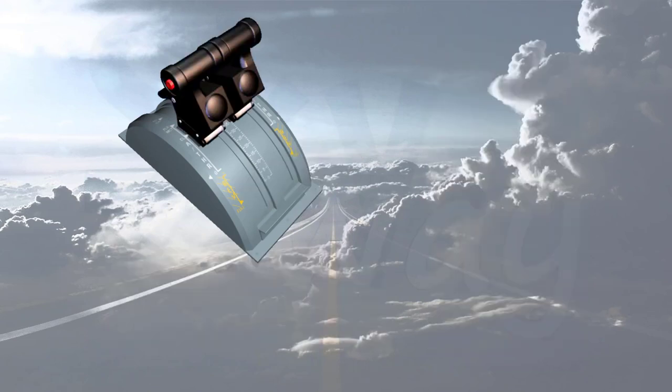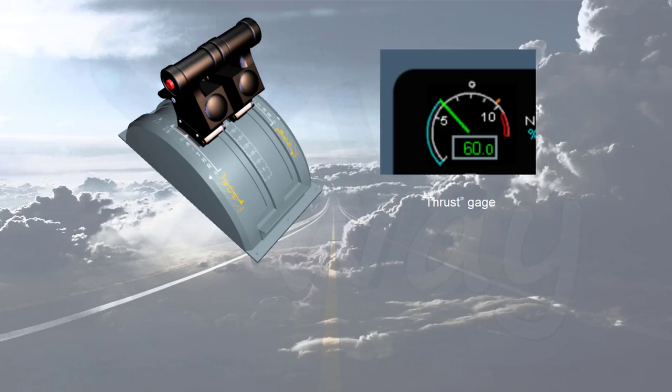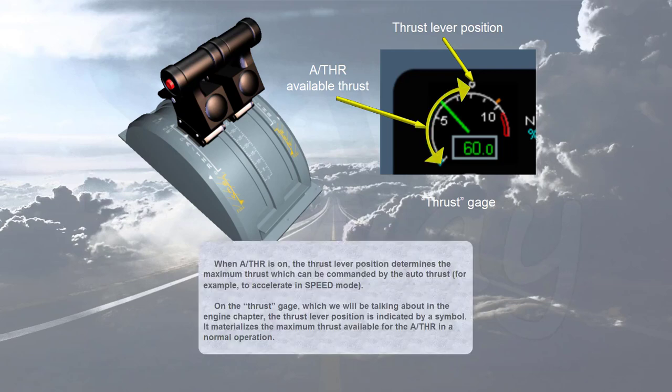Note: the alpha floor function is an exception which will be covered later on. When auto thrust is on, the thrust lever position determines the maximum thrust which can be commanded by the auto thrust — for example, to accelerate in speed mode. On the thrust gauge, the thrust lever position is indicated by a symbol which materializes the maximum thrust available for the auto thrust.